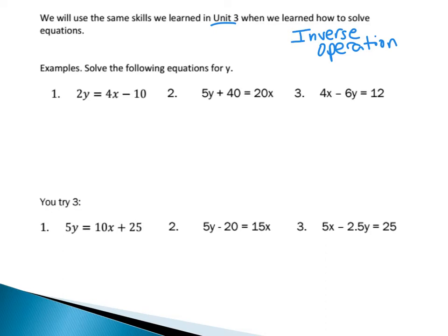Here's what I mean. Looking at the first example: I have 2y equals 4x minus 10. My goal is to isolate the y. Looking at 2y, in order to get y by itself, I need to get rid of this 2. What does 2y mean? It really means 2 times y. So if I want to undo that, I'm simply going to divide by 2 — that's going to cancel out the 2 on top and the 2 on bottom.